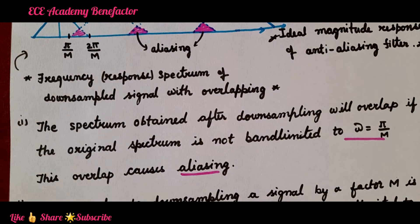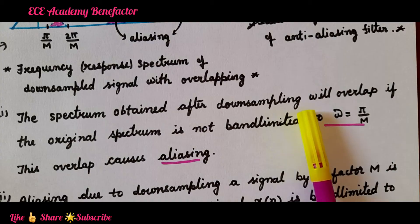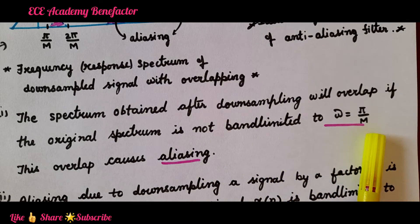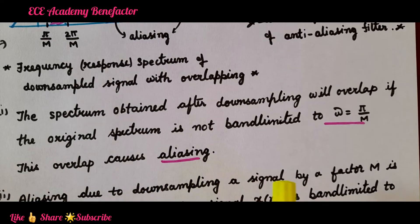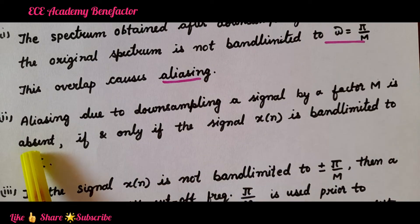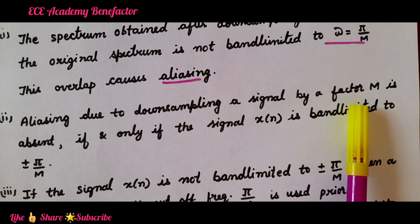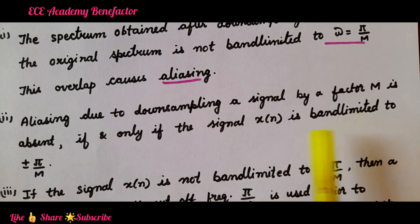Let us see a few points under decimation. First point: the spectrum obtained after down sampling will overlap if the original spectrum is not band limited to omega equal to pi by M. This overlapping causes aliasing. Second point: aliasing due to down sampling a signal by a factor capital M is absent if and only if the signal x of n is band limited to plus or minus pi by M.